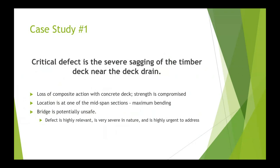The critical defect is the severe sagging of the timber deck near the deck drain, resulting in loss of composite action with the concrete deck — the strength is compromised. As mentioned, that deck is the main load carrying element. The worst location is at mid-span, where we would expect maximum bending load on the bridge. The bridge is potentially unsafe. The defect is highly relevant, very severe in nature, and highly urgent to address. An evaluation confirmed that the timbers acting on their own did not have the structural resistance required to support the loads that could act on that structure. The photos were from a 2016 inspection, and as a result, this bridge has since been replaced.